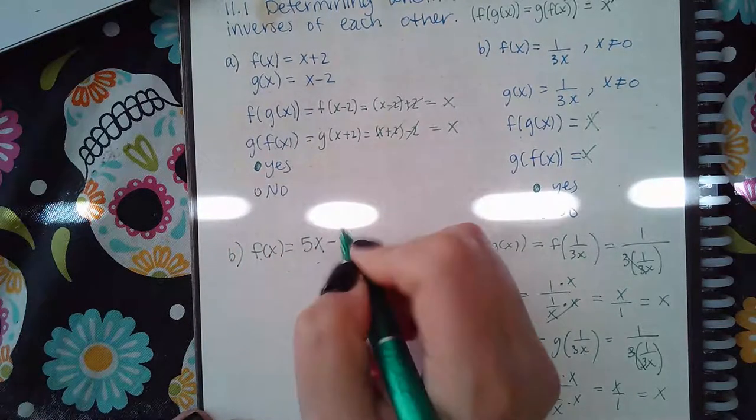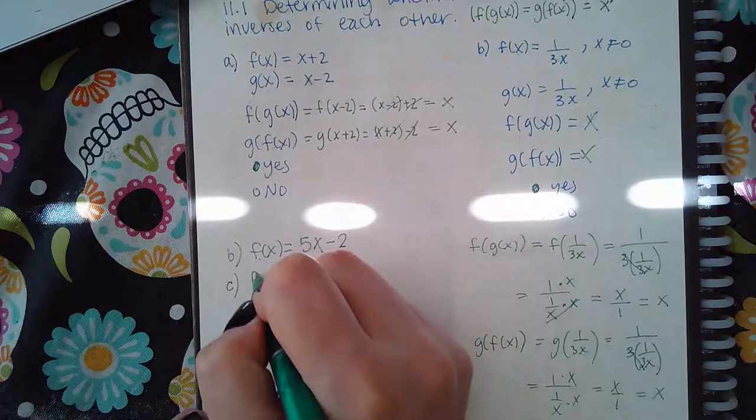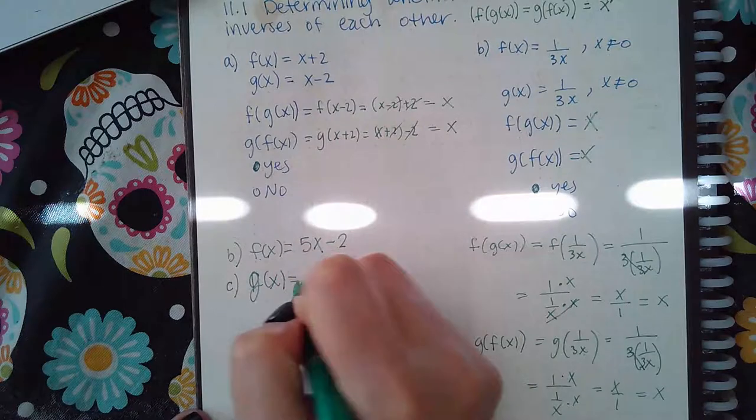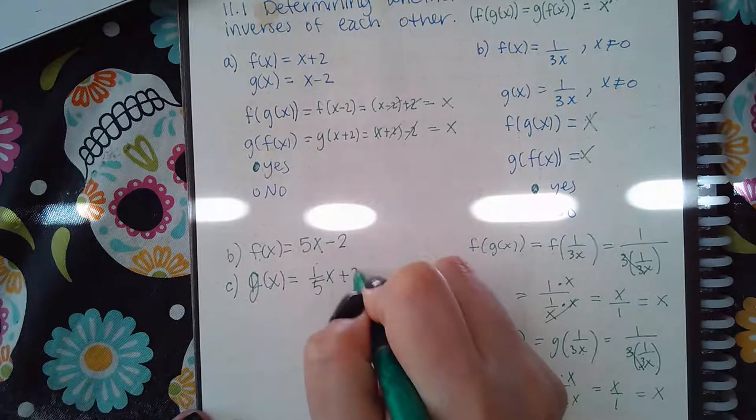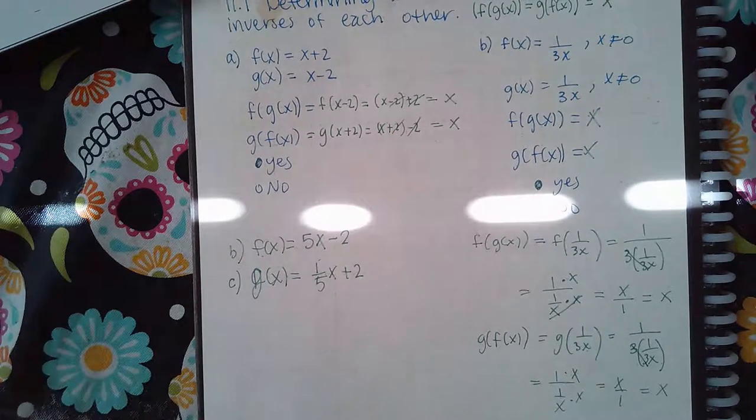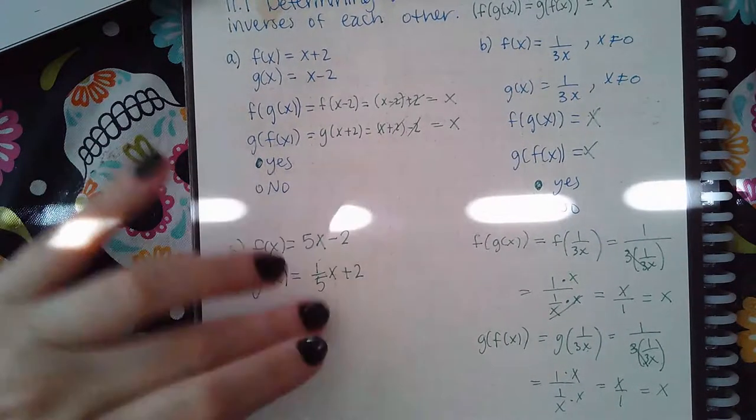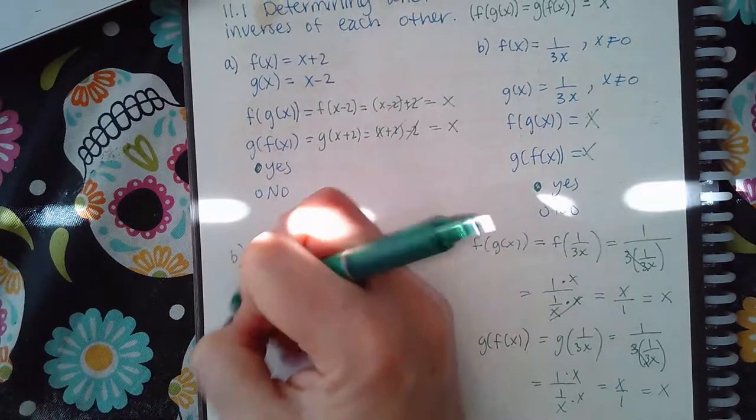That doesn't always mean that's going to happen. For instance, what if I have 5x minus 2 and then I have one-fifth x plus 2? It kind of looks like they would be inverses because this is a reciprocal of that and that's the opposite of that, but let's see.